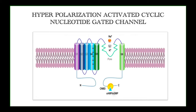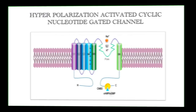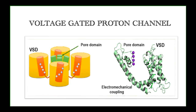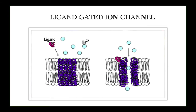Next are hyperpolarization-activated cyclic nucleotide-gated (HCN) channels, which also have a central channel with S1 through S6 subunits, where S4 is the operating subunit. The difference is that sodium or potassium ions move in or out with the help of cyclic nucleotides like cyclic AMP or cyclic GMP, which facilitate the opening and closing of the ionic channel. Next is the voltage-gated proton channel — a uniform channel with four outer and four inner components, allowing uniform movement of protons (H+ ions) in one direction, also called a uniport.